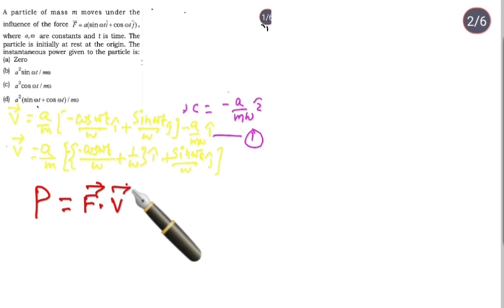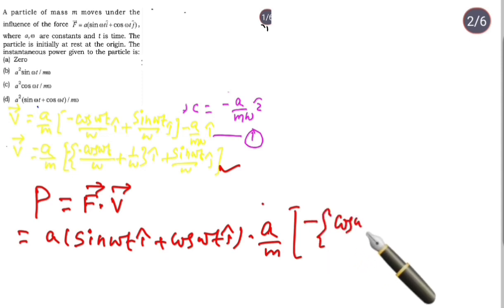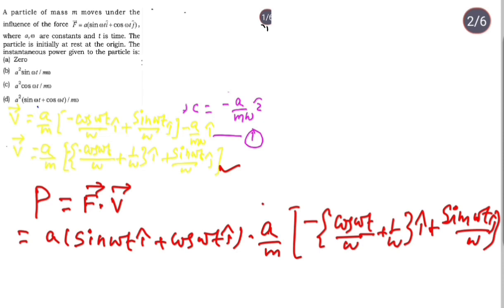We've calculated the velocity vector. The force vector is given in the question as a sin ωt i cap plus a cos ωt j cap. The velocity vector we have is (a/m)[(-cos ωt/ω + 1/ω) i cap + (sin ωt/ω) j cap]. So we'll do i into i and j into j.